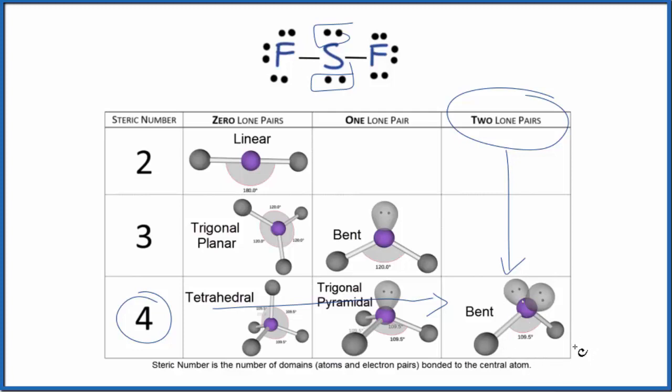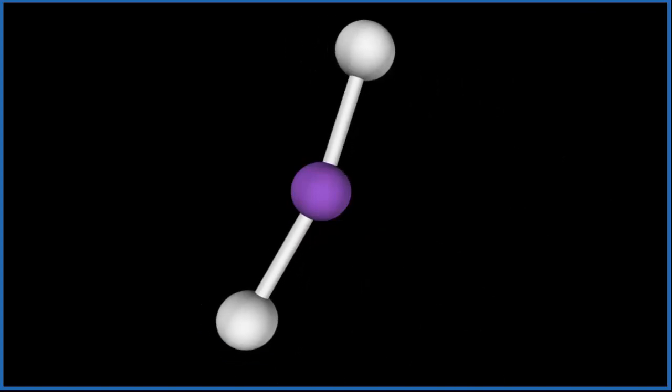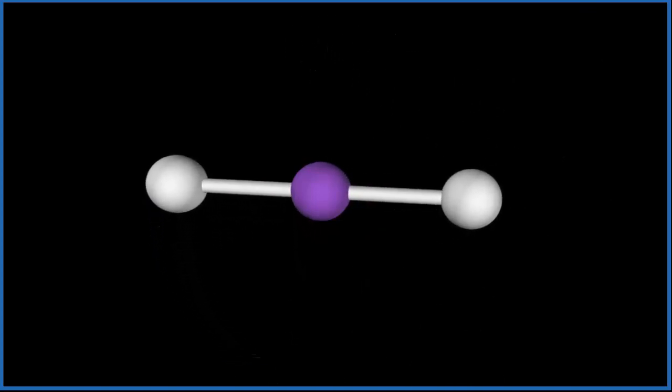Let's take a look at a three-dimensional model and see what this looks like. So if you imagine this is our central sulfur atom, we're going to add two fluoride atoms. So there's one, then we add the other one, they spread out, they push to be as far away from each other as they can.